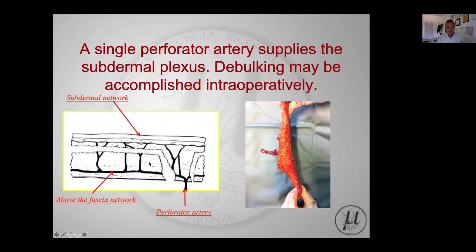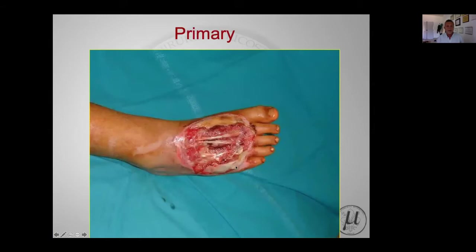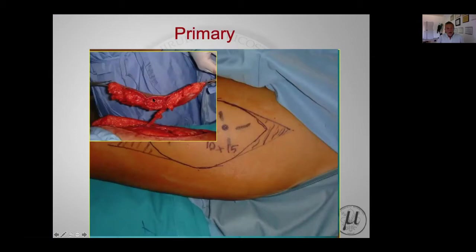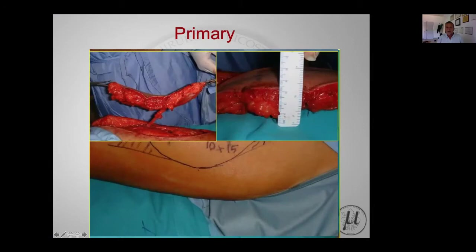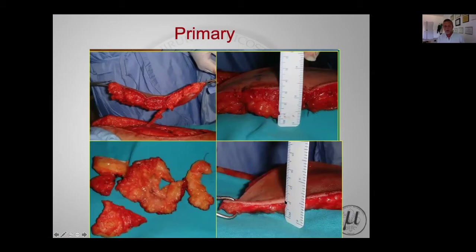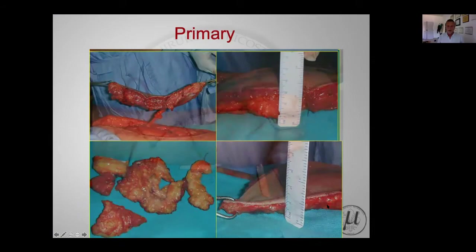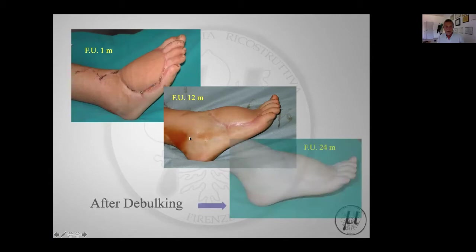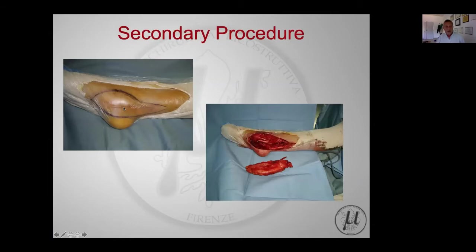The concept is always the same: we can remove the fat and the deep fascia above the fascial network, provided that we maintain a small perforator going to the subdermal network, which is enough to supply the flap. This is an example of primary debulking in a 15-year-old child where the ALT flap harvested with skin, subcutaneous fat, and deep fascia is about 3.5 centimeters thick. After intraoperative debulking it reaches about one centimeter in places, and even after 12 months there is still some bulkiness. After secondary debulking, we achieve a very good contour.